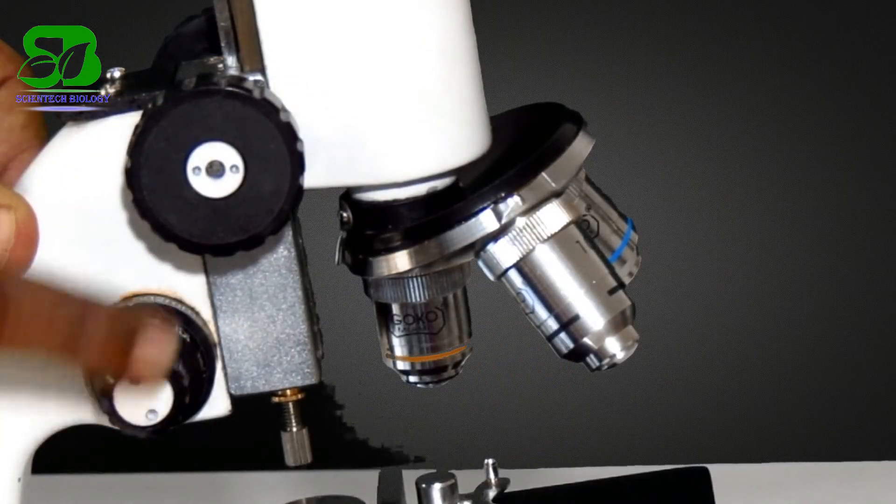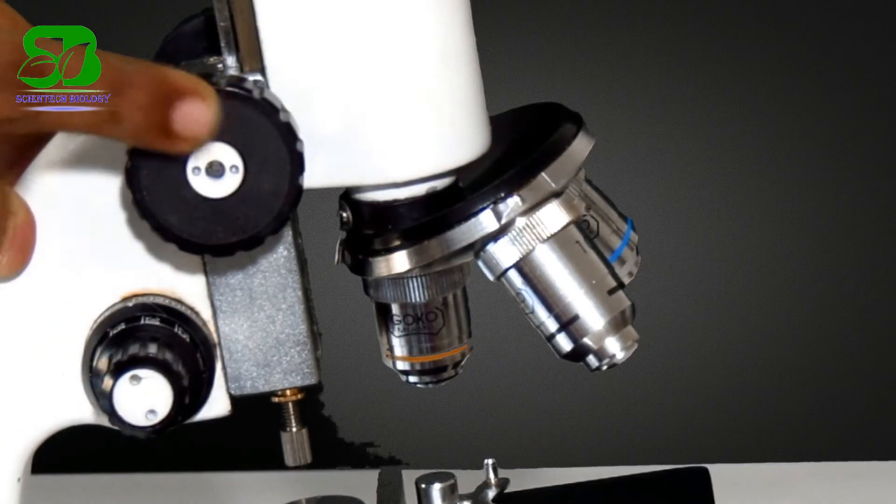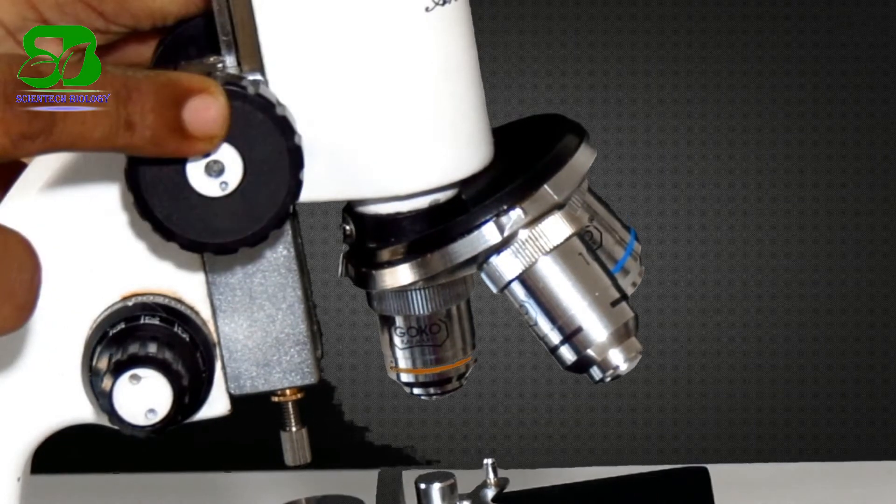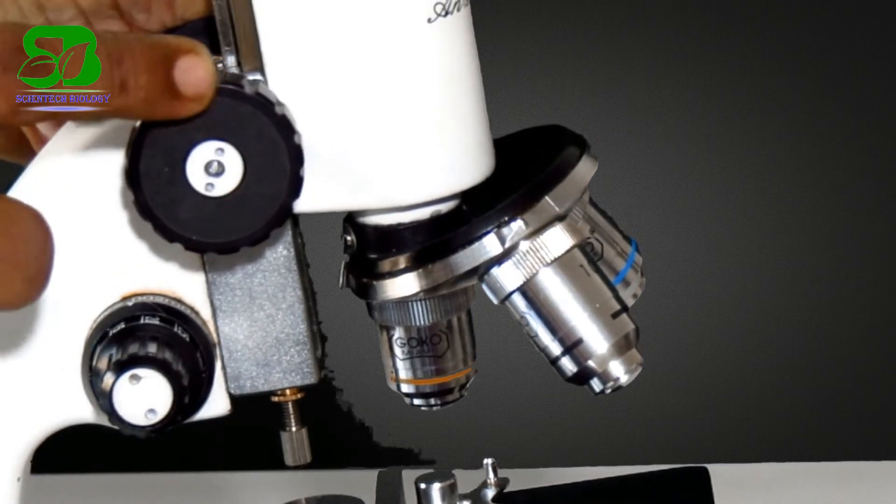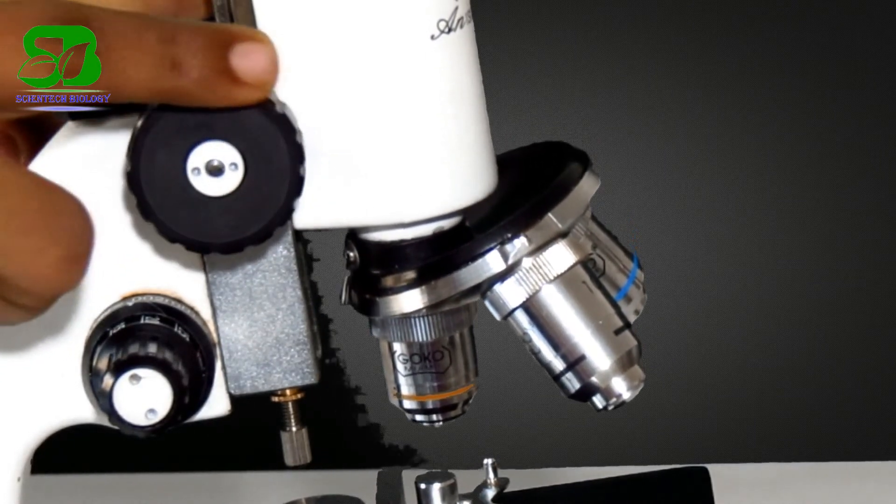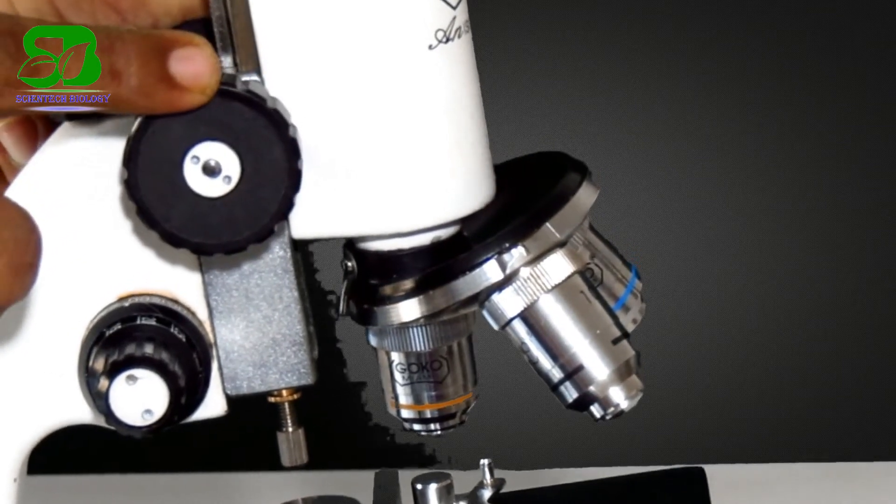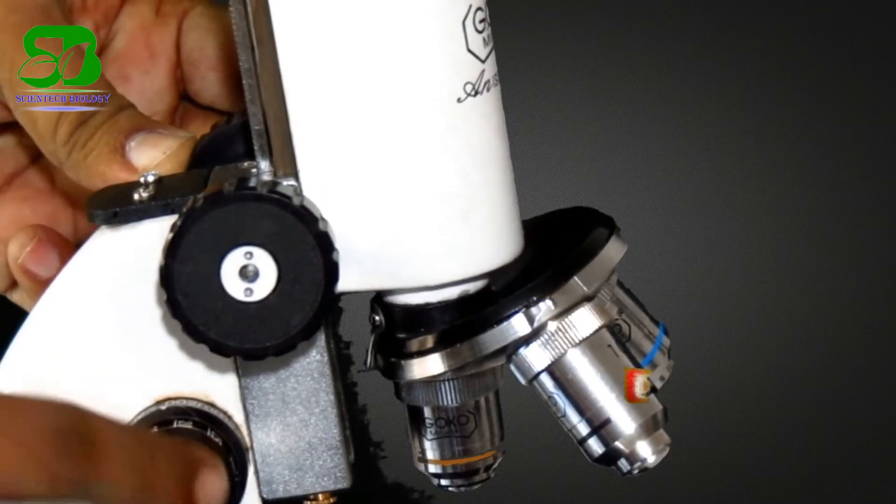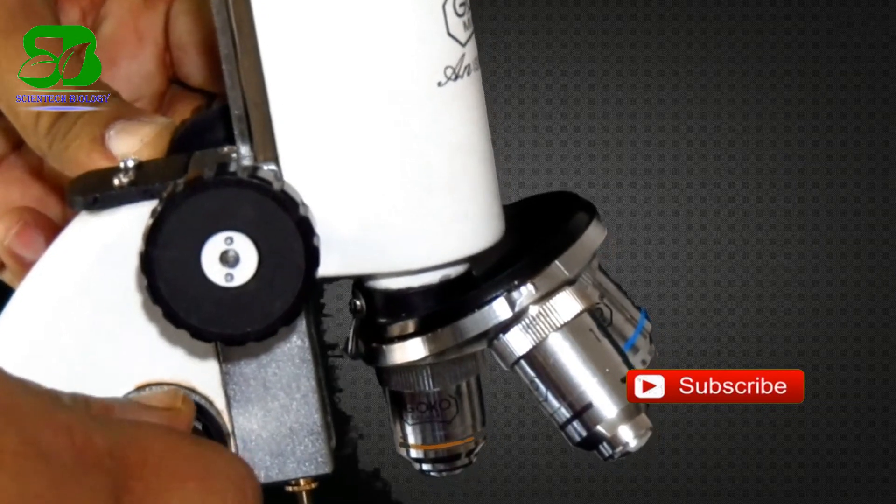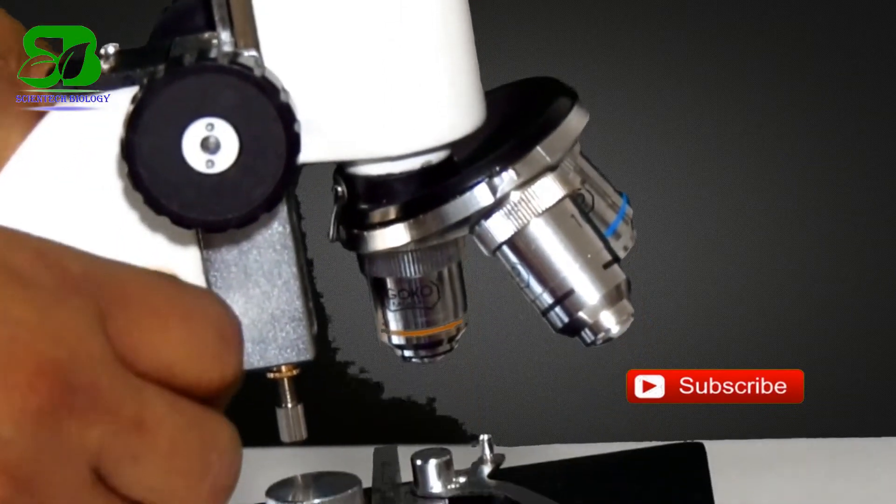Here at the arm you can see two adjustment knobs. The upper one is the coarse adjustment and the lower one is fine adjustment. The clockwise turn of the knob moves the body tube downward. This fine knob has similar operation and is used to focus on slides clearly.